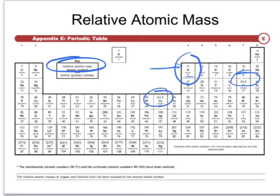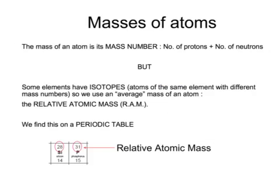For example, chlorine has some atoms weighing 35 and others weighing 37. So in summary, the mass of an atom is its mass number, but some elements have isotopes — that's atoms of the same element but with different mass numbers. In these cases, we have to use an average mass of the atom, which is called the relative atomic mass, and that's on the periodic table. It's the larger of the two numbers, the one at the top — just look at the key on the periodic table. And it's this one that we use to work out the mass of atoms, and therefore the mass of a mole of atoms.